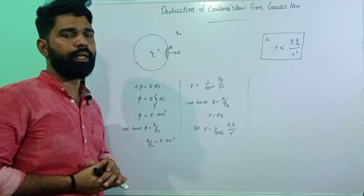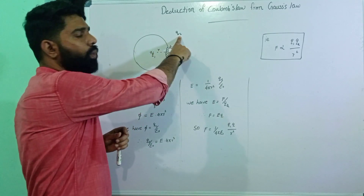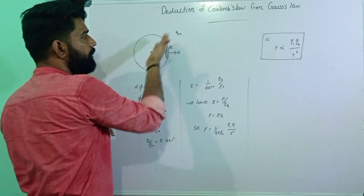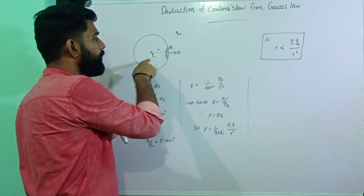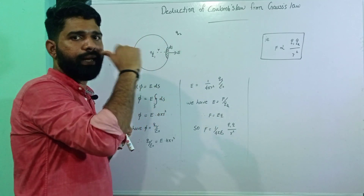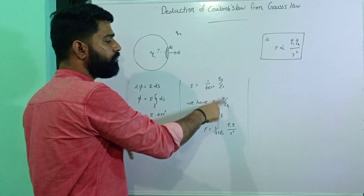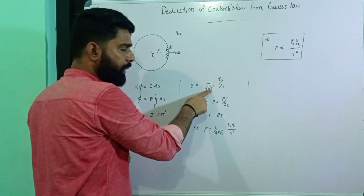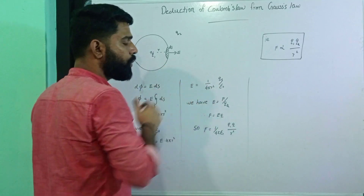Now if we consider a test charge q2 placed at that point on the surface, the electric field E equals the force F divided by q2. So F by q2 gives us the electric field experienced by the test charge q2 due to q1.